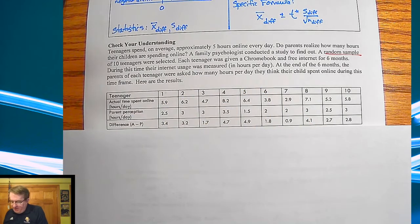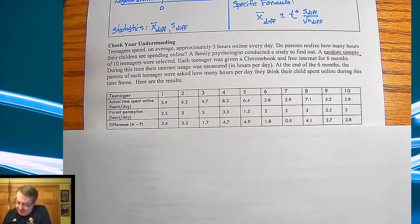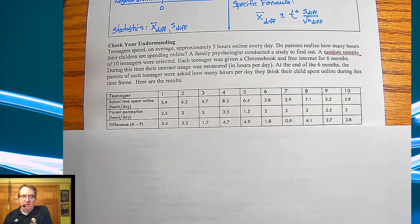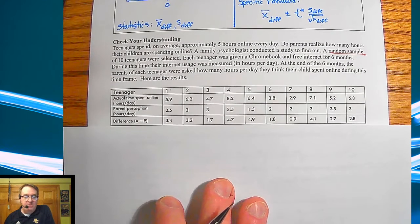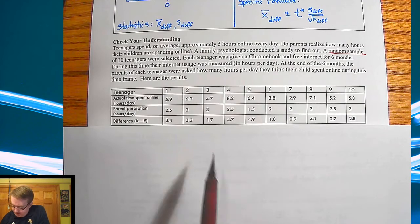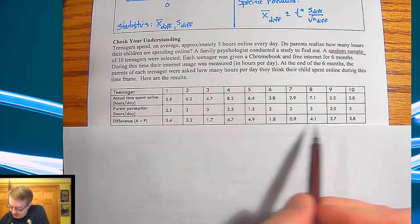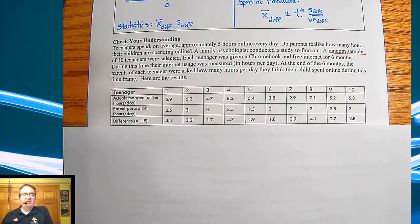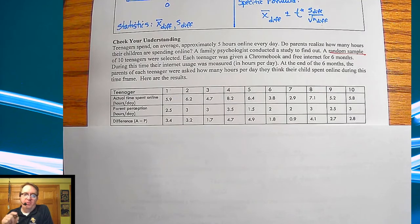The check your understanding example is about how much time teenagers actually spend online versus how much their parents perceive that they're spending online. There's data provided and the differences have been calculated for you. Go ahead and calculate what's asked and then run the confidence interval.